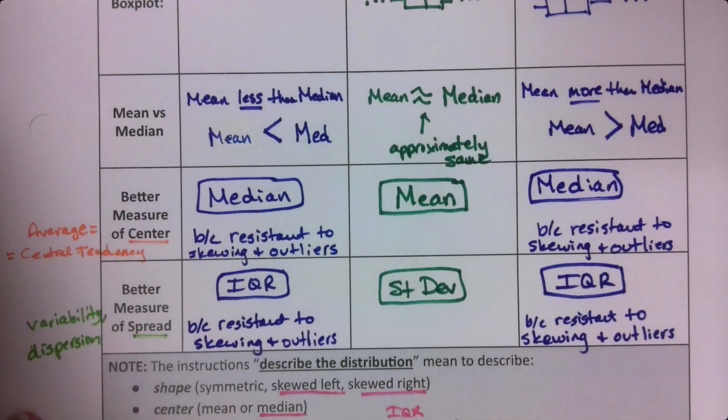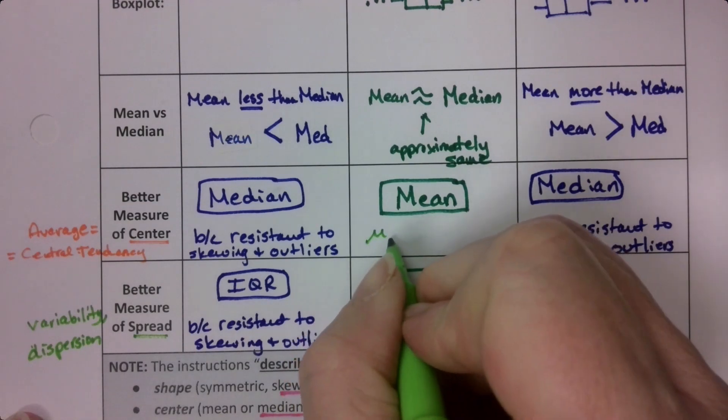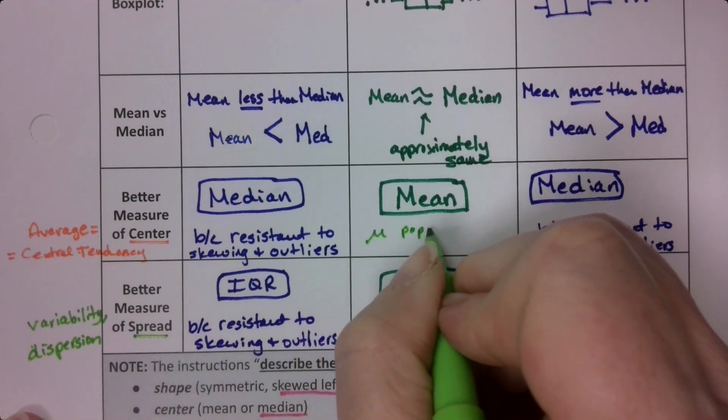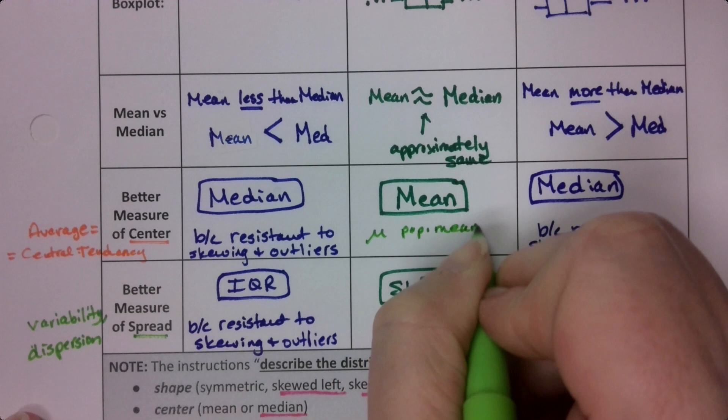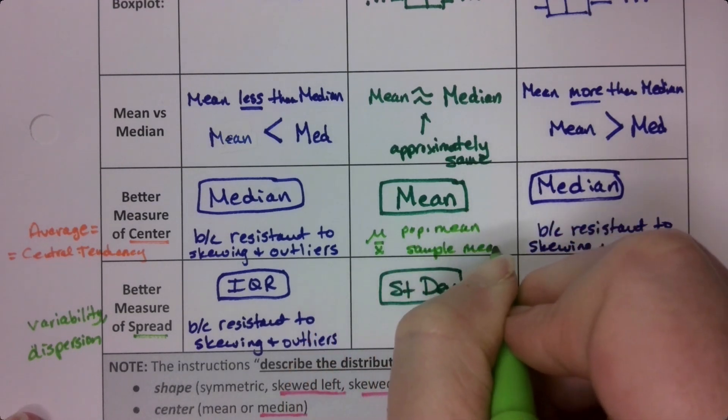Now, just a reminder, the mean symbol, which we learned way back, is mu if it's a population, and x bar if it's a sample mean. Just a reminder of the notation.